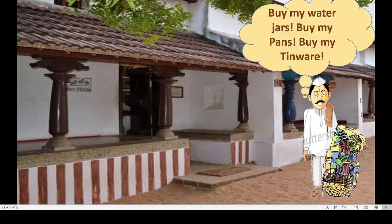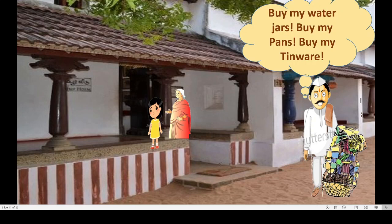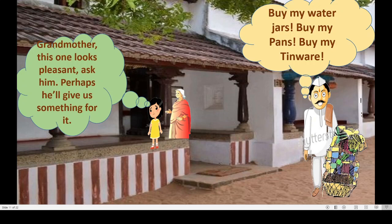He passed her house calling, 'Buy my water jars, buy my tinware, buy my brass.' The little girl heard him and begged her grandmother to see what this merchant would give for the dish. The grandmother said, 'My child, the merchant who was just here threw the dish on the ground and went away. I have nothing else to offer in trade.' But the girl said, 'Grandma, this one looks pleasant — ask him, perhaps he will give us something for it.'